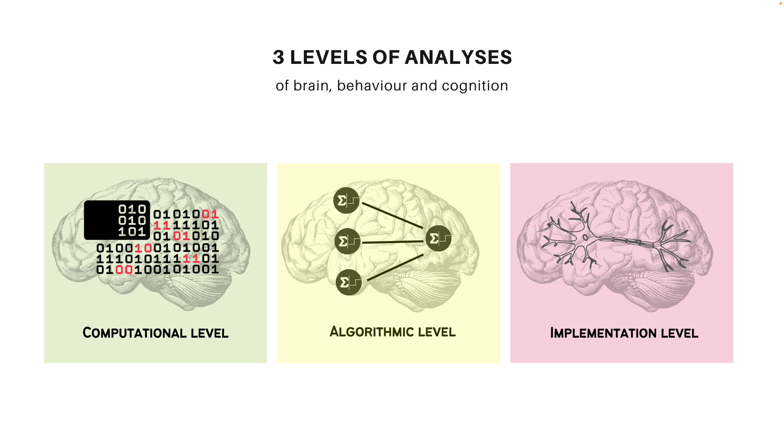Marr stated that a well-rounded theory of human vision could be created if vision was articulated at all three levels. Following Marr's proposition of three levels of analysis, it has been used for over decades to explain and understand various aspects of human and animal cognition. In this video, we will dive deep into understanding what each of these levels are and understand each level as applied to the study of reinforcement learning.